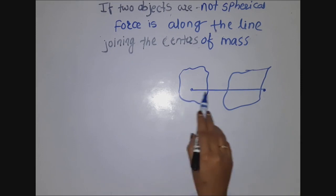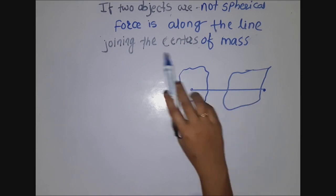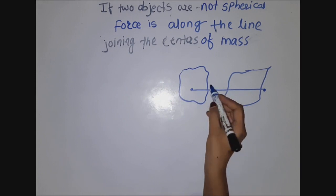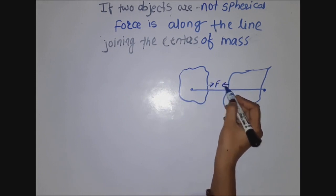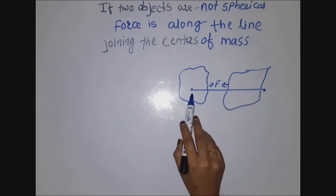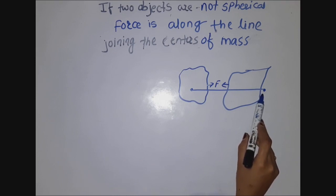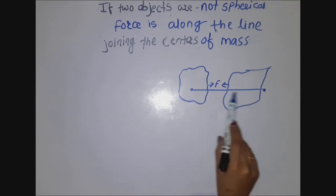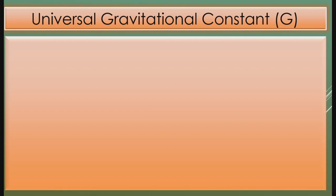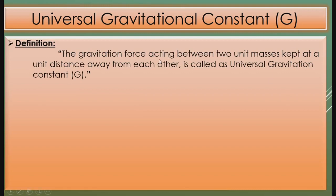The line joining these two points gives the direction of the force. The next and most important point is the universal gravitational constant. This point we can see in four formats. Firstly, we have to see its definition. The definition of universal gravitational constant is: the gravitational force acting between two unit masses kept at a unit distance away from each other is called the universal gravitational constant.